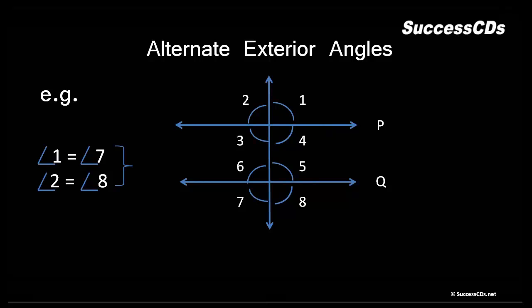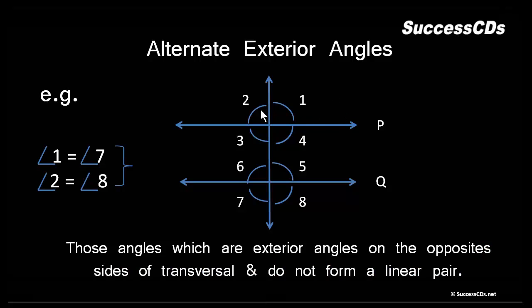Next we move to alternate exterior angles. Exterior angles are 1, 2, 7, and 8. Angles 2 and 8 are alternate, and angles 1 and 7 are alternate. Therefore angle 1 equals angle 7, and angle 2 equals angle 8. These are exterior angles on opposite sides of the transversal and do not form a linear pair. Alternate exterior angles are always equal to one another.